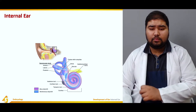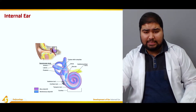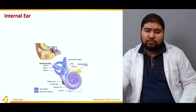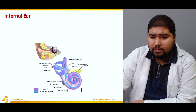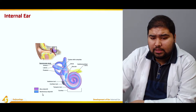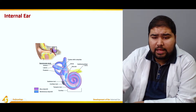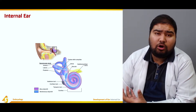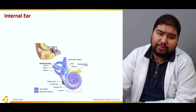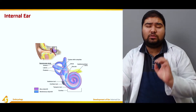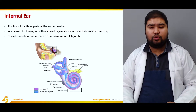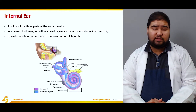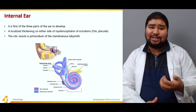The figure represents the internal ear — this is an expanded view. The purple shows the bony labyrinth and the blue shows the membranous labyrinth. At this point in time we will not go into the details of the bony and membranous labyrinth; we will take them one by one. Importantly, the internal ear is the first of the three parts of the ear to develop.